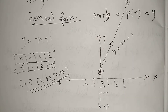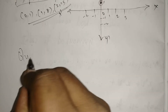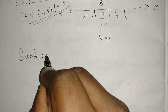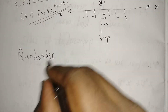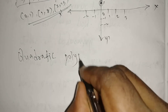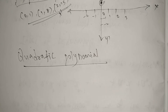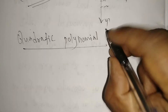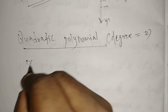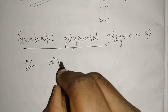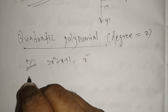Next topic: quadratic polynomial. The degree, as we know, is two. Example: 2x² + x + 1, or simply x². The general form is ax² + bx + c.